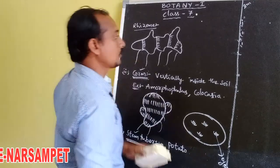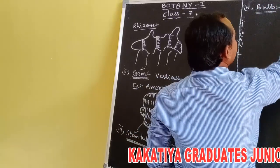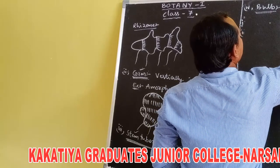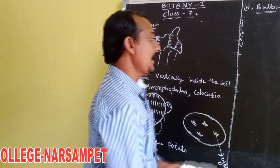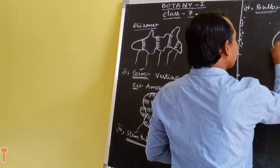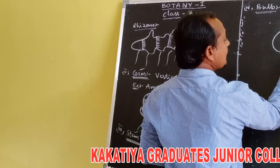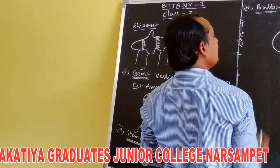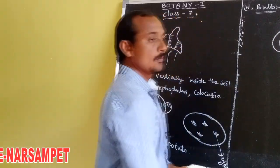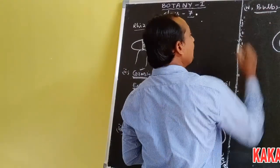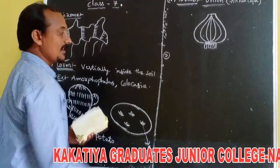Fourth is bulb. In onion (Allium cepa), the stem is reduced to form a discoid structure. Below the stem, adventitious roots are developed. Above the stem, leaf bases store food material and become fleshy. These are called bulbs. All these are the underground stem modifications.